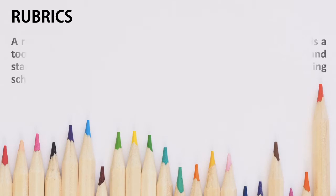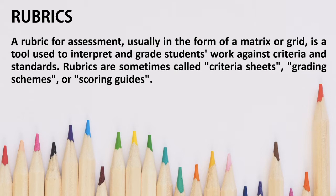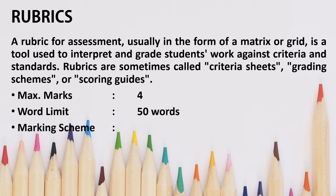The rubric for assessment is usually in the form of a matrix or grid — a tool used to interpret and grade students' work against criteria and standards. Rubrics are sometimes called criteria sheets, grading schemes or scoring guides. For this particular topic, the maximum marks awarded are four: two marks for content and two marks for expression. The word limit, as already discussed, is 50 words.